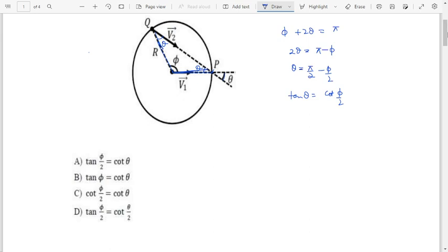cot theta. So you can convert this into cot theta, so cot theta will be equals to, like if you take the reciprocal, so you can say that this is 1 upon cot theta, this is 1 upon tan phi by 2. So cot theta will be equals to tan phi by 2.